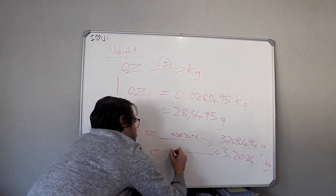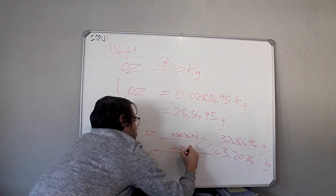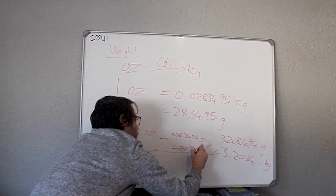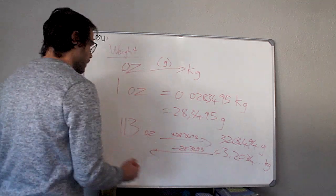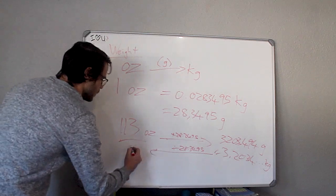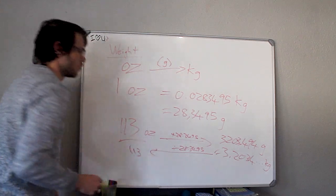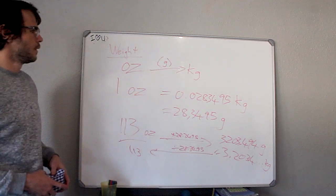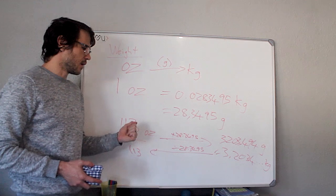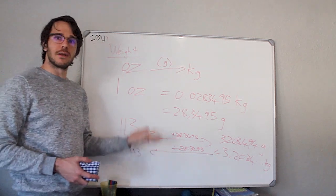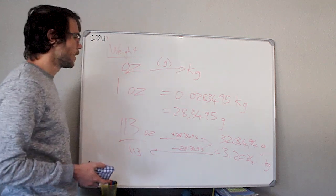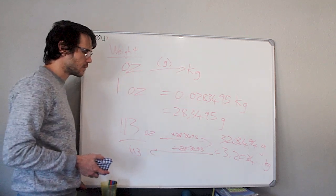We have to divide by 28.3495, which gives us 113. Just like with the distances, fairly straightforward, linear, constant conversions from the one unit into the other. Don't really get into any trouble with any of them.